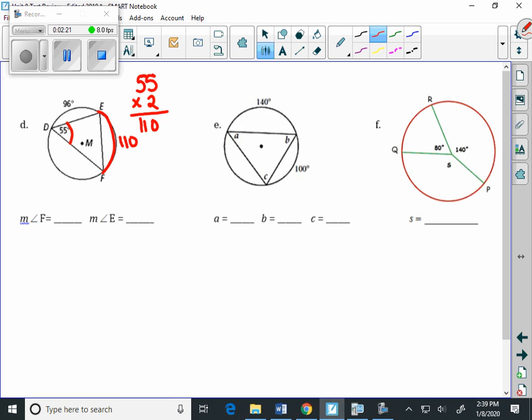And we want to figure out now what the measure of angle E is and the measure of angle F equals. We actually can figure out what F is, but the same reasoning here is that this angle here is half the measure of this arc. So the measure of angle F is half of 96.